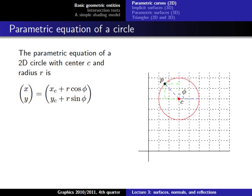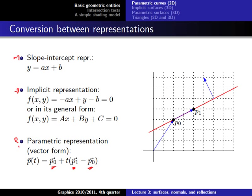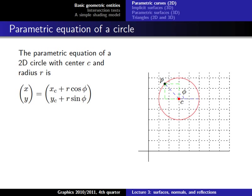Now for the parametric equation of a circle: we again want a single parameter to control all points on the curve. Any idea what that parameter could be? The angle - exactly. Knowing the center, radius, and angle, we can easily access every point on a circle. The angle increases continuously through 360 degrees, making it a very natural and intuitive control parameter.